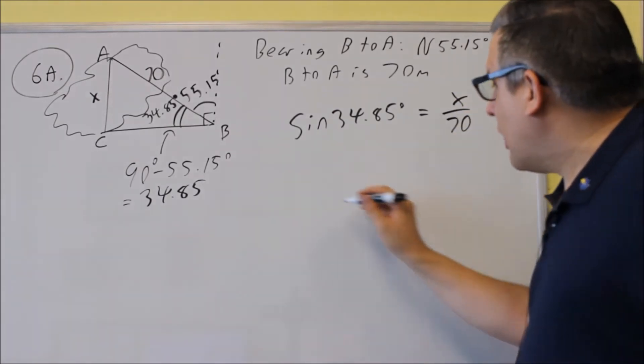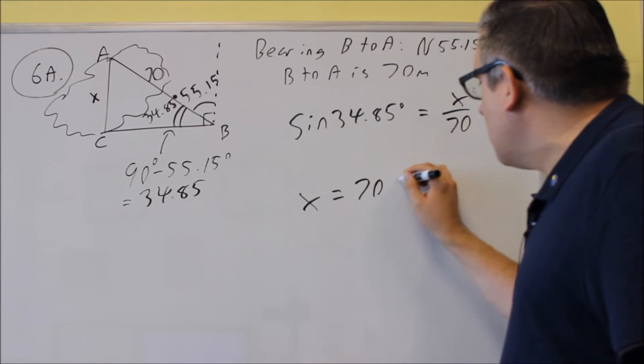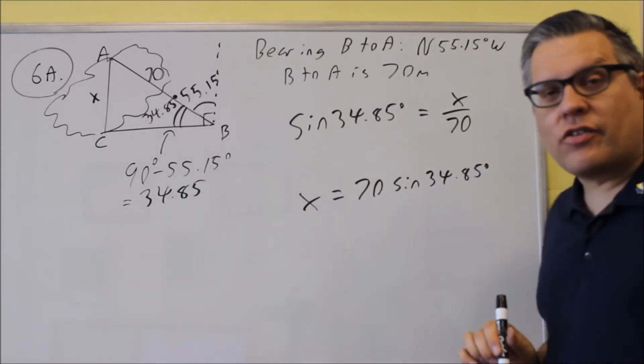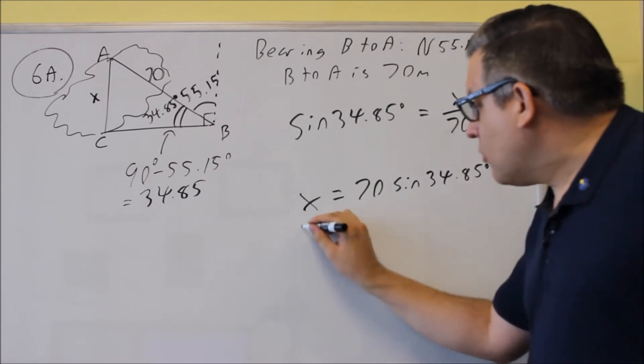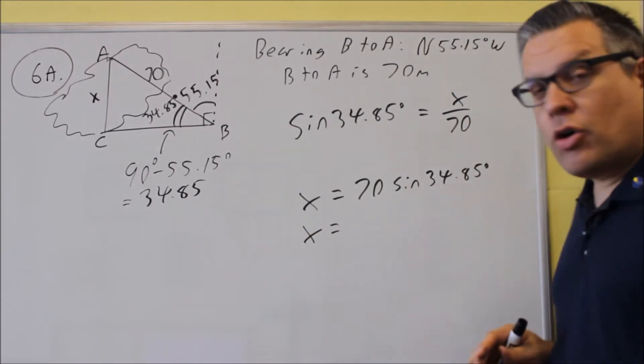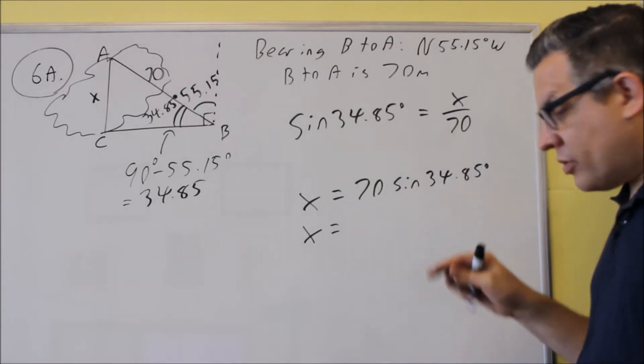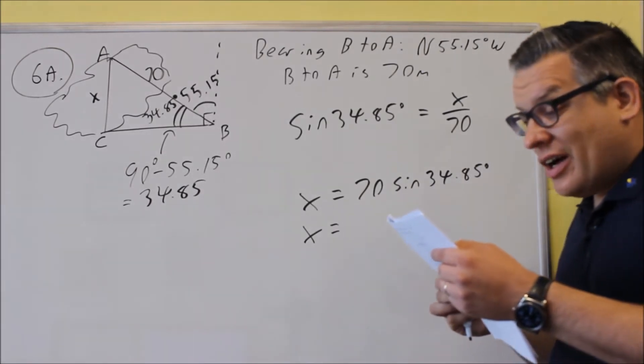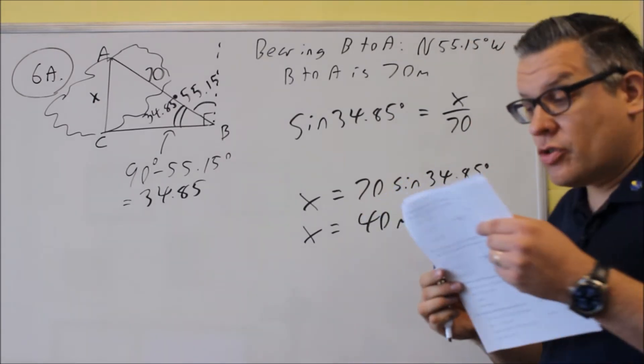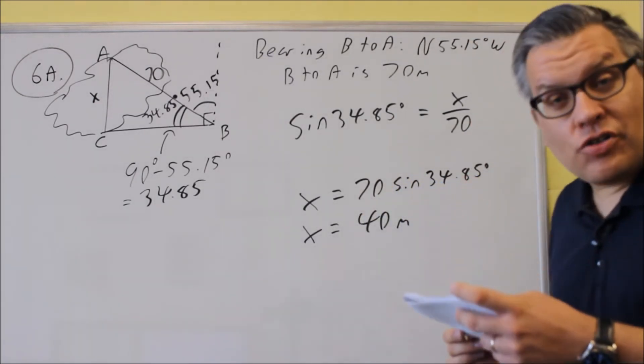Then you're going to cross multiply it and X is 70 sine 34.85 degrees. When we do this, we want to make sure the calculator is in degree mode. So when we punch this into the calculator, the distance from A to C is going to be about 40 meters, rounded to the nearest meter.